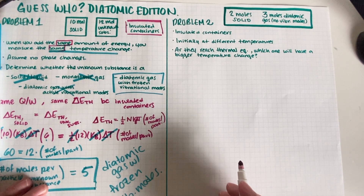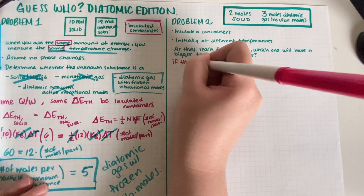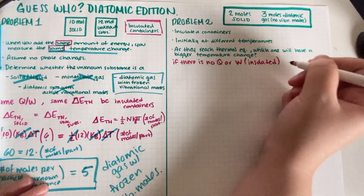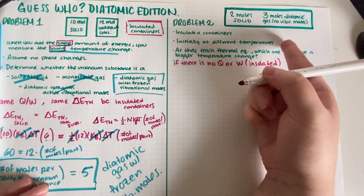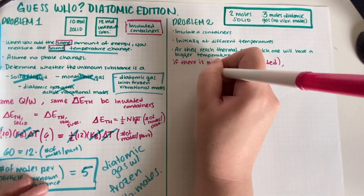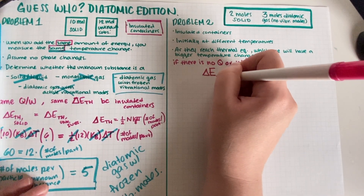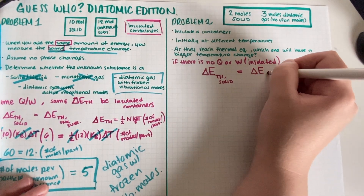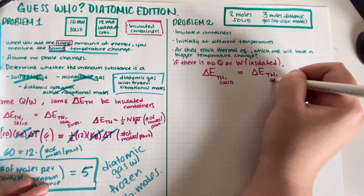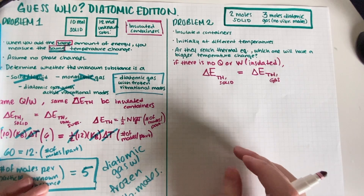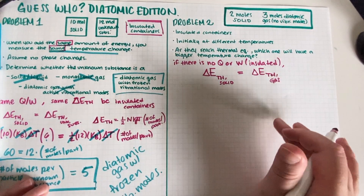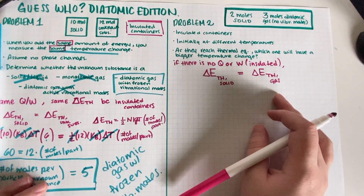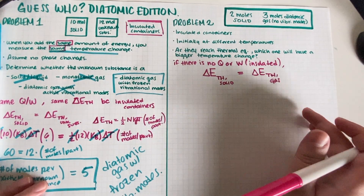Instead of two separate containers with heat added individually, both substances are put together and they reach thermal equilibrium. Because this is an insulated container, energy is conserved — there is no Q or W leaving. Whatever energy one substance gains, the other must lose, meaning the magnitudes are equal: |ΔE_thermal of the solid| equals |ΔE_thermal of the gas|.